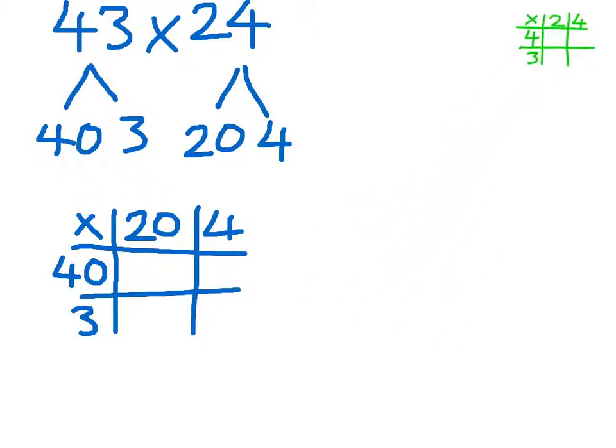Back to our grid. We're now going to multiply together the numbers in the 40 row. First of all, 40 times 20. 4 times 2 is 8. 4 times 20 is 80, and I need to make that 10 times bigger. So that will give me 800.